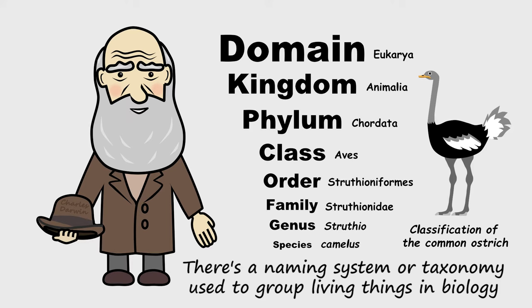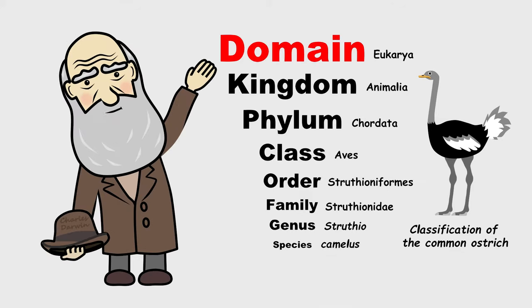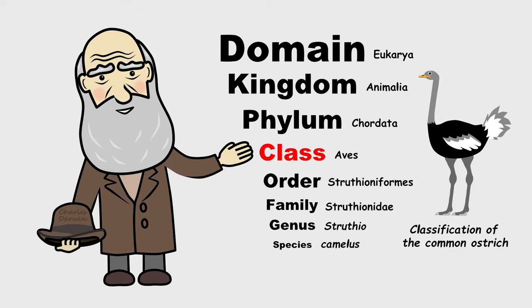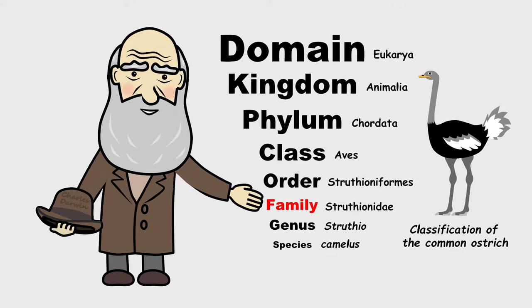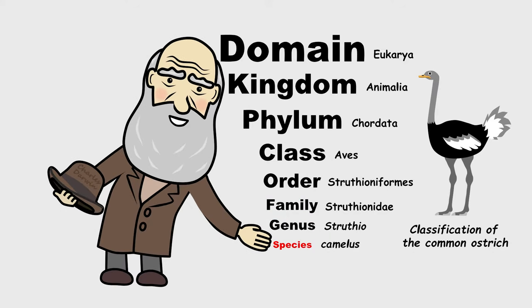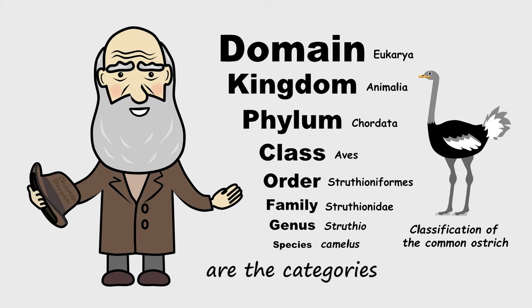There's a naming system or taxonomy used to group living things in biology. Domain, kingdom, phylum, class, order, family, genus, species are the categories.